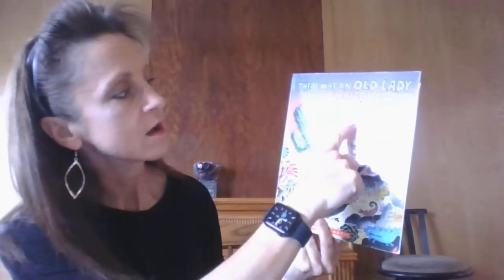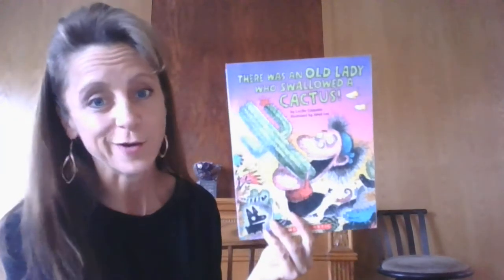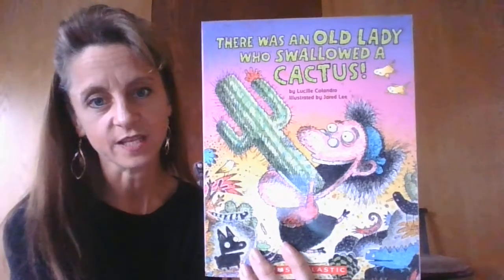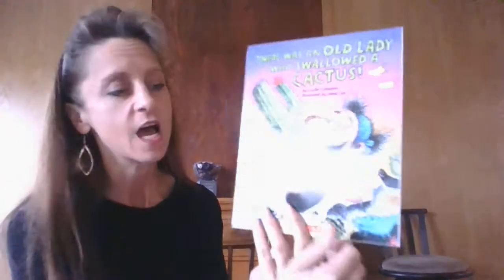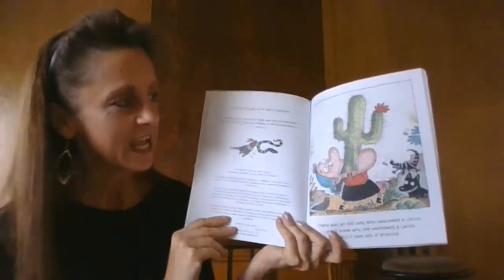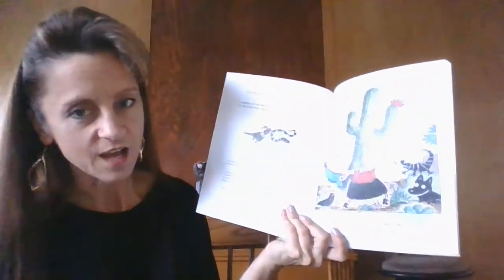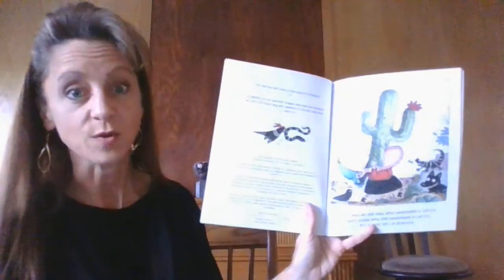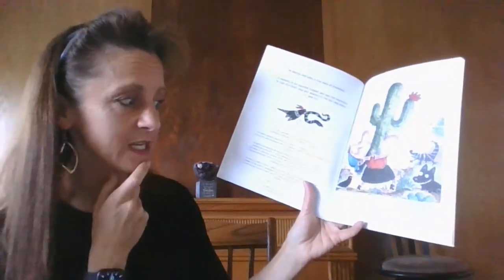The author Lucille Calandro has written lots of stories about a very interesting character she calls the old lady. This is the old lady who swallowed a cactus, a type of plant that would be off your pokey. You might wonder why she would want to do that. This is spun off of the old lady who swallowed a fly. There's lots of rhyme and repetition, so let's see if we can remember how things go and make predictions about what might come next.